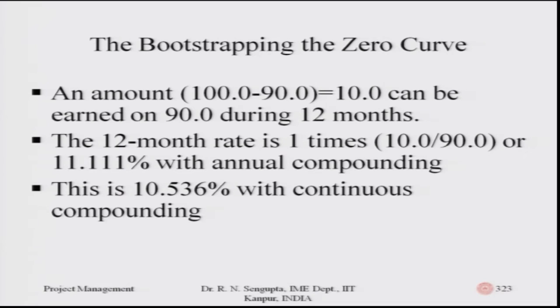For the third set of values, you earn ten rupees or dollars on a face value of 190, meaning ten can be earned on a value of 90 over one year. Since there is only one payment in one year, the twelve-month interest rate is one multiplied by ten divided by ninety, giving 11.111, calculated on an annual compounding basis. Converting to continuous compounding, the value comes out to 10.536. We have thus found the continuous compounding interest rate for one quarter of a year, half a year, and one year.